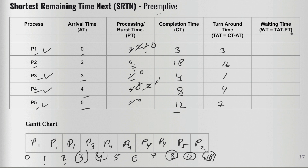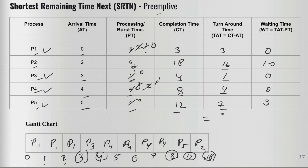Waiting time is turnaround time minus processing time. P1 = 3−3 = 0, P2 = 16−6 = 10, P3 = 1−1 = 0, P4 = 4−4 = 0, P5 = 7−4 = 3. For average turnaround time, sum 3+16+1+4+7 and divide by five. For average waiting time, sum 0+10+0+0+3 and divide by five.